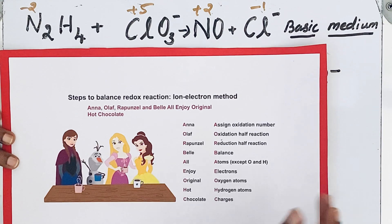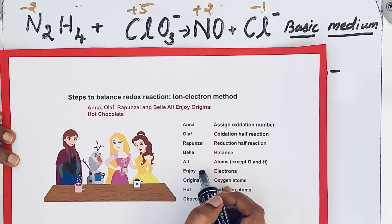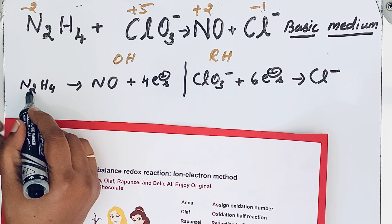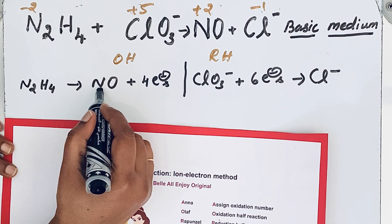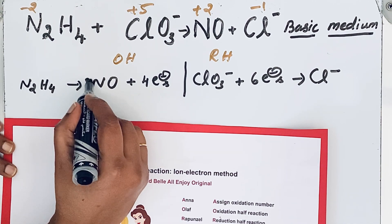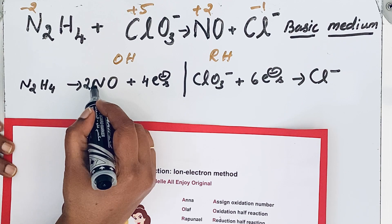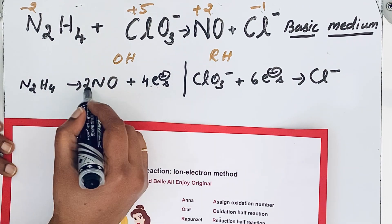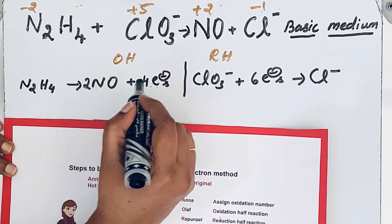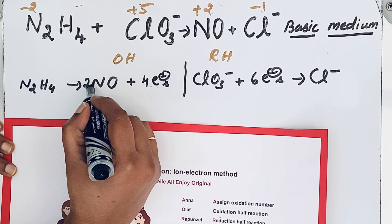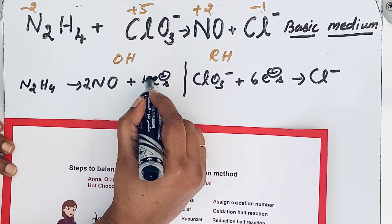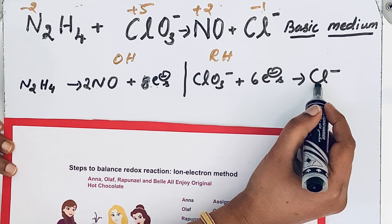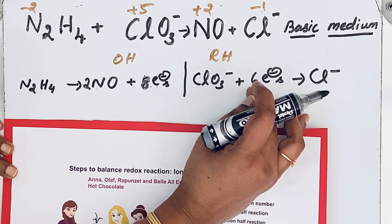Now come to the next step: Balance — we are going to balance atoms except oxygen and hydrogen first. In N2H4 there are two nitrogen atoms, but in NO there is only one nitrogen atom, so we need to place a coefficient of 2 before NO to balance nitrogen. When you do that, you must also update the number of electrons: per nitrogen atom it was 4 electrons, but now with 2 nitrogen atoms it becomes 8 electrons. This step is very important. For ClO3 minus, chlorine is already balanced on both sides, so no need to change the electrons there.